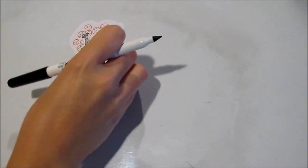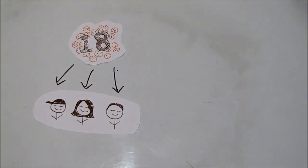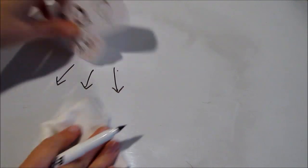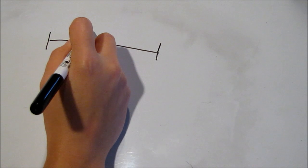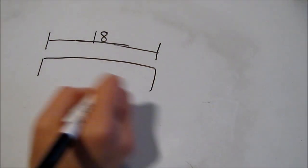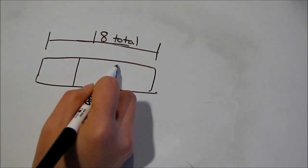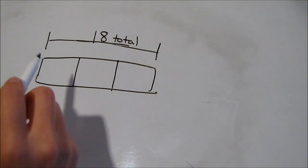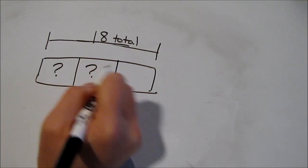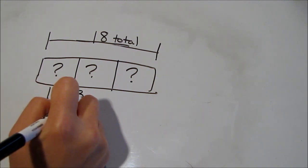Let's look at a slightly different separating problem. This time, we have 18 cookies that are being shared by three kids. We want to know how many cookies each kid gets. The kids won't get more than 18 cookies, so we're going to be separating them. 18 is our total, and we're trying to figure out the size of our groups. This time we know how many groups there are: three. Each kid is a group because each kid is getting his or her own cookies. So I draw my three groups and put a question mark in each group because that's what I'm trying to find — the size of each group. At this point, I can move to a division-solving strategy to find my answer of six cookies.